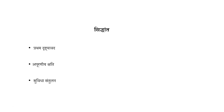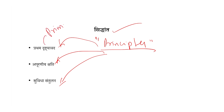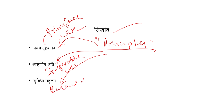Temporary injunction — statutory provision for temporary injunction. Now we will see some principles. These are three principles based on the concept of stay order in CPC. The first principle is prima facie case, the second is irreparable loss, and the third is balance of convenience.